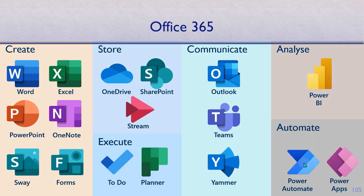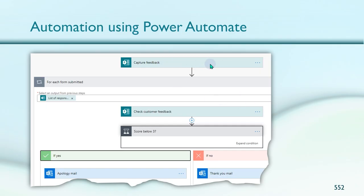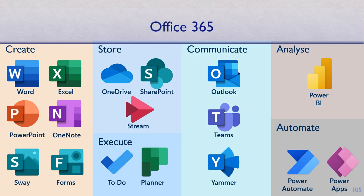You go to Power Automate and tell it to monitor the form. Whenever someone submits, it wakes up, checks the rating or score, and acts accordingly — this is a trigger, the starting point of an automation workflow. You don't want to manually refresh this for 15 days, so let Power Automate do it. This is how Forms differentiates itself from other survey tools — they may have more features but automation is missing because they work in isolation. This is a platform, not a random collection of apps. That's the most important part.